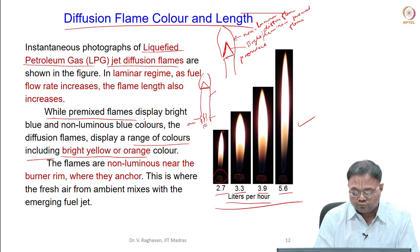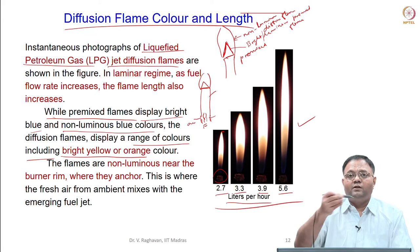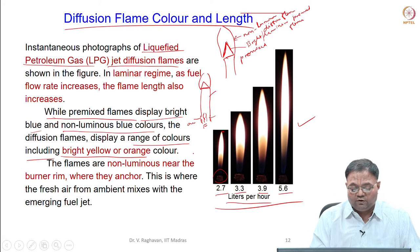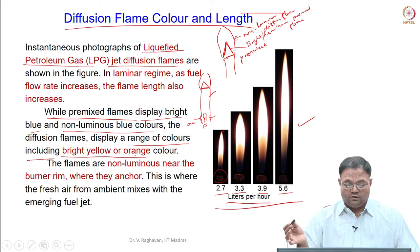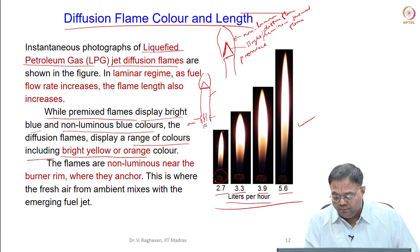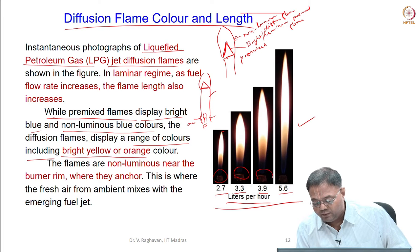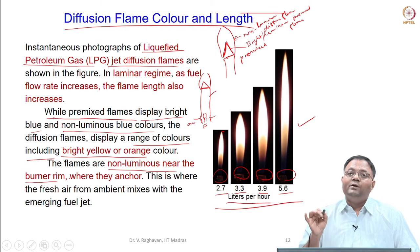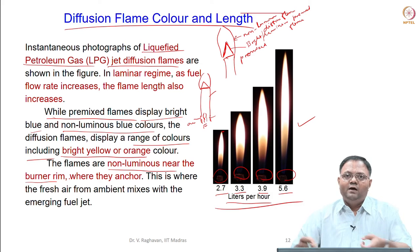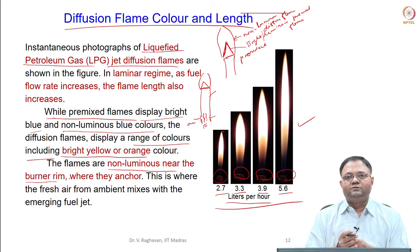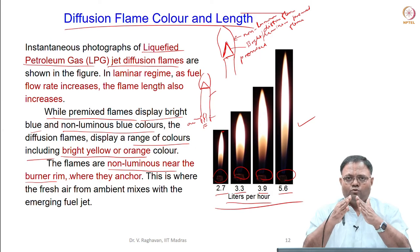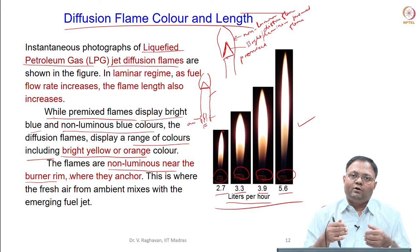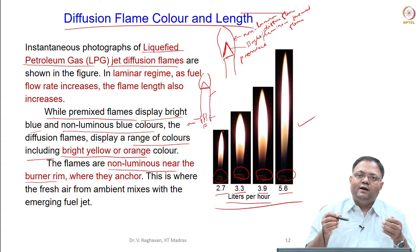In a premixed flame, a bright blue inner cone and a non-luminous blue outer diffusion mantle are seen. But in the diffusion flame, a range of colors including bright yellow or orange are visible. Near the burner rim, the flame is non-luminous because the momentum is higher there and entrainment takes place, and proper mixing occurs just away from the potential core. The potential core is a triangular region; just away from it, proper mixing of air occurs due to the high momentum of the jet via viscous effects.